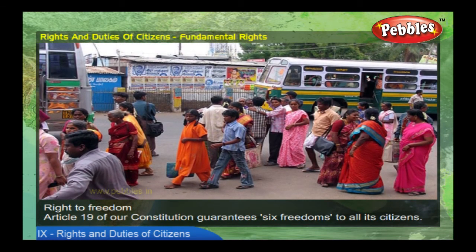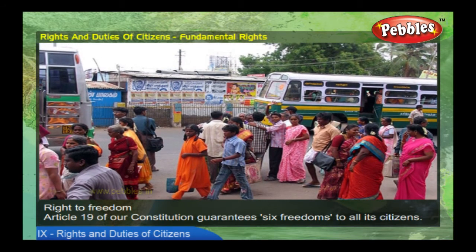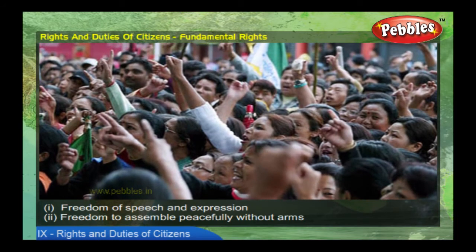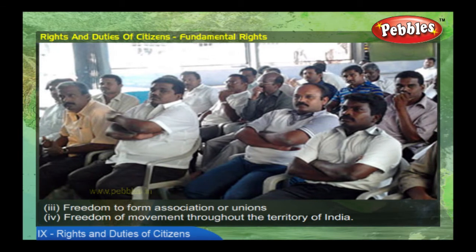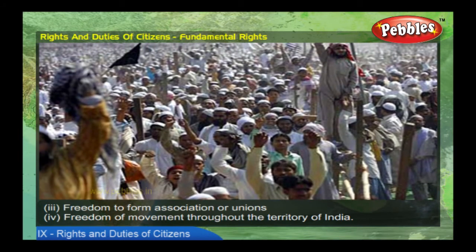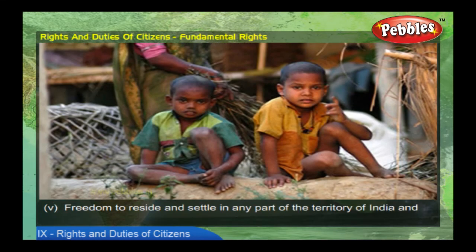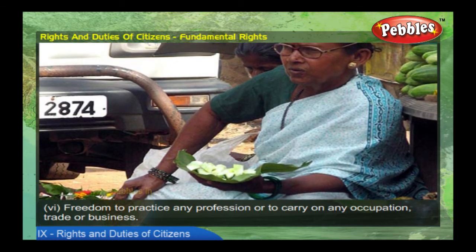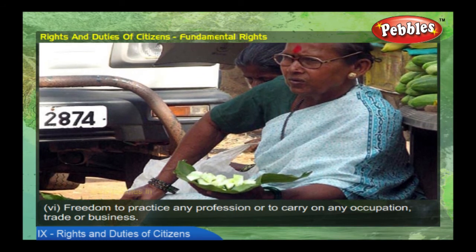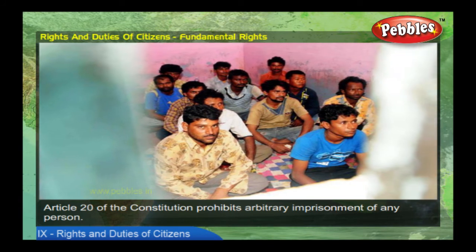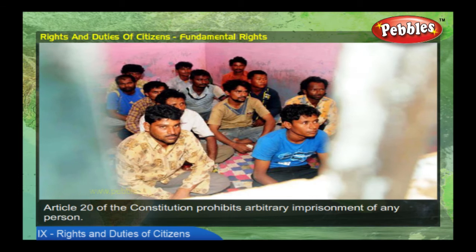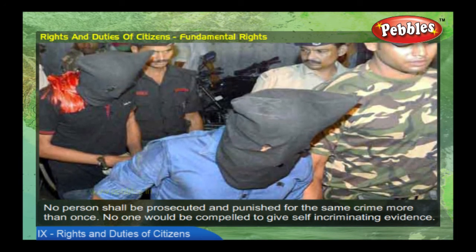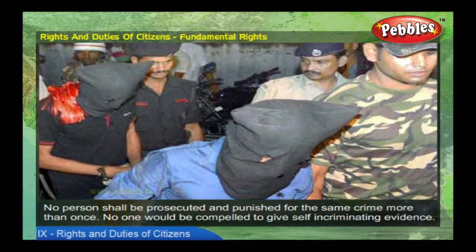Right to freedom: Article 19 of the constitution guarantees six freedoms to all citizens — freedom of speech and expression, freedom to assemble peacefully without arms, freedom to form associations or unions, freedom of movement throughout the territory of India, freedom to reside and settle in any part of India, and freedom to practice any profession or to carry on any occupation, trade, or business. Article 20 of the constitution prohibits arbitrary imprisonment; no person shall be prosecuted and punished for the same crime more than once, and no one would be compelled to give self-incriminating evidence.